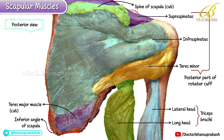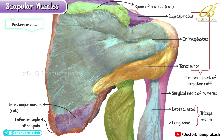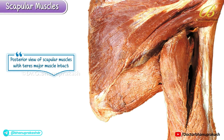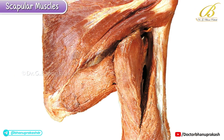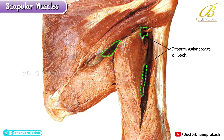Other notable features include the long head and lateral head of the triceps brachii, and the constricted region of the humerus identified as the surgical neck. This image shows the posterior view of the scapular muscles with the teres major muscle intact, clearly demonstrating the intermuscular spaces of the back, also known as the scapular spaces.